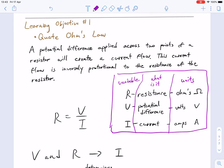Our first learning objective today is to look at Ohm's Law. We'll be talking about Ohm's Law in more detail next time, but I wanted to introduce the idea today. A potential difference applied across two points of a resistor will create a current flow. This current flow is inversely proportional to the resistance of the resistor.